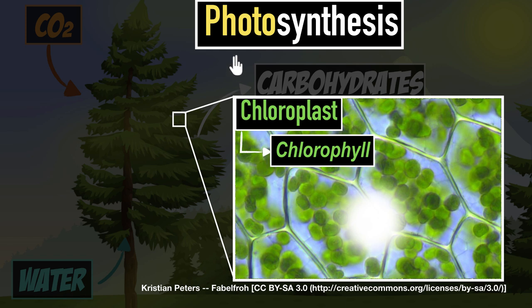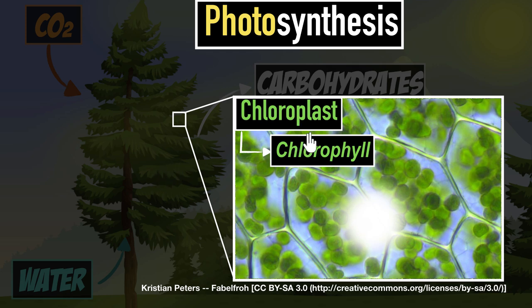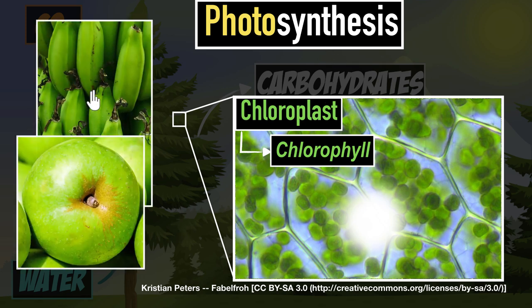Secondly, I used to think this process only happens in the leaves, but no. It can also happen in the stem, the buds, and sometimes in the fruits as well. Photosynthesis can happen in any part of the tree which is green, because any green part has chloroplasts, and wherever chloroplasts are present, photosynthesis can happen. You may have seen green bananas and apples — they are green because of chloroplasts and chlorophyll, and they can also carry out photosynthesis. Leaves carry out most of the photosynthesis, but not just leaves.